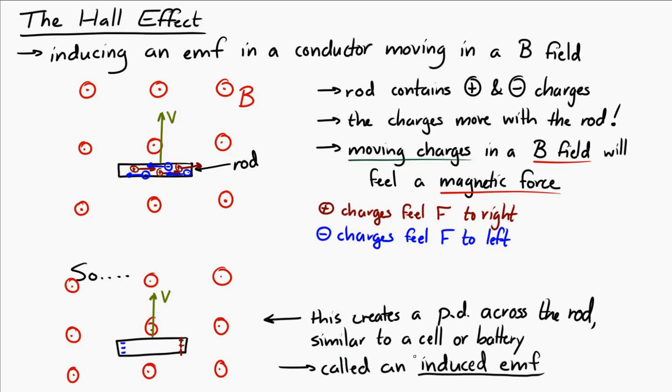And of course, we could change the direction of the magnetic field. We could have the rod moving in different directions. And in multiple ways, we could set up a situation where the negative charges would travel to one side of the rod, and the positive charges would travel to the other side of the rod. And we would get an induced EMF in all kinds of different ways.